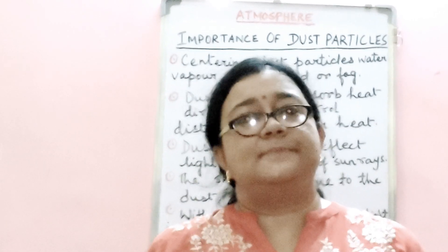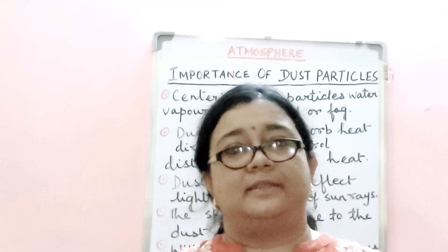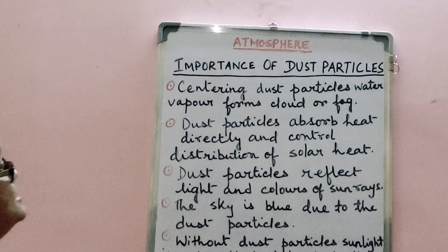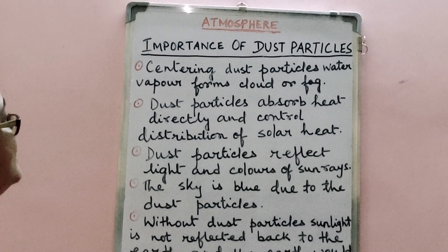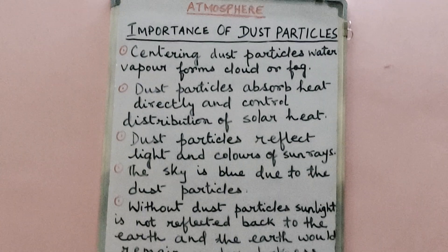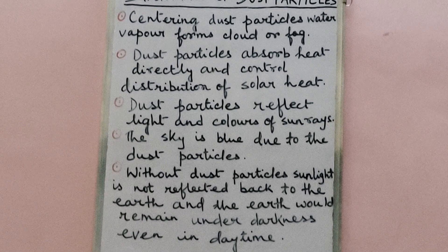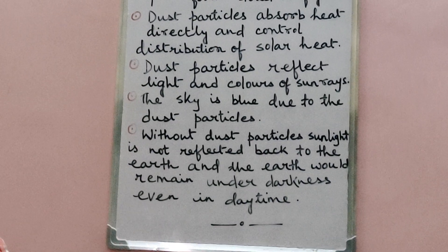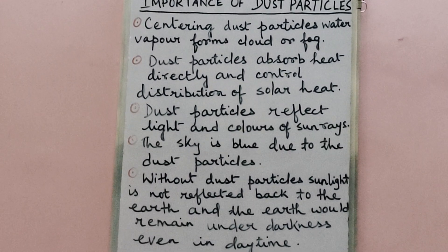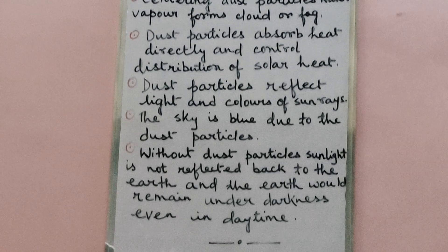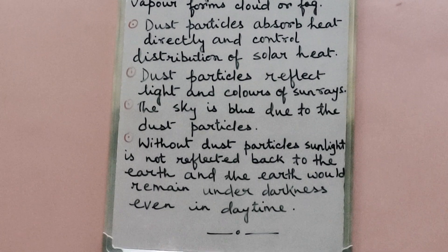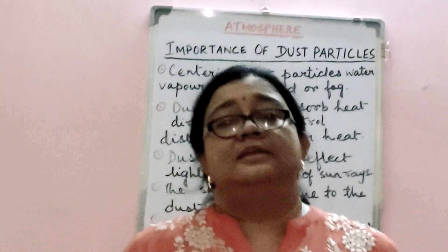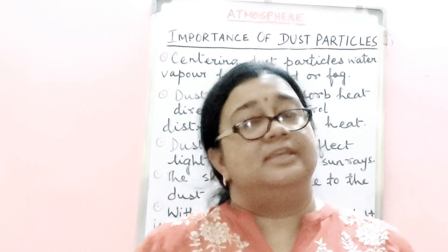Like water vapor, dust particles also play an important role in the Earth's atmosphere. First, centering on dust particles, water vapor forms clouds or fog. Second, dust particles absorb heat directly and control the distribution of solar heat. Third, dust particles reflect light and the colors of sun rays. Fourth, the sky is blue due to dust particles. Finally, without dust particles, sunlight would not be reflected back to the Earth and the Earth would remain in darkness even in daytime.